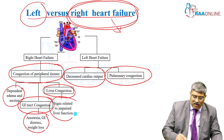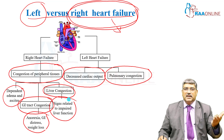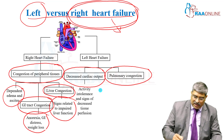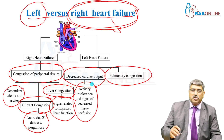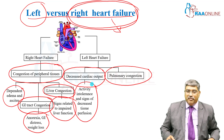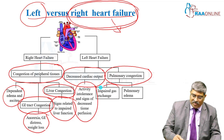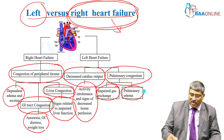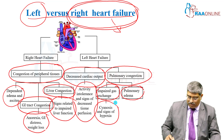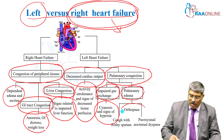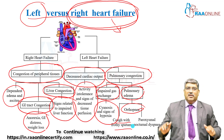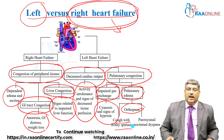Liver congestion can lead to impaired liver function with transient elevation of liver enzymes or congestive hepatomegaly. With decreased cardiac output, there is decreased tissue perfusion throughout the body — kidneys, liver, and brain can all be affected. With pulmonary congestion, there is impaired gas exchange and the patient develops pulmonary edema with signs and symptoms of hypoxia, orthopnea, cough with frothy sputum, and paroxysmal nocturnal dyspnea.